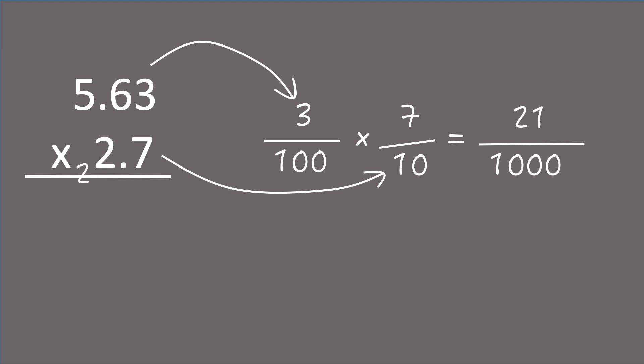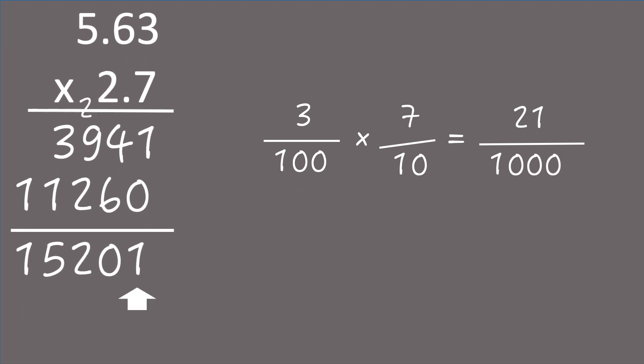Actually it's in this way, and with our understanding of fraction multiplication, that we can make out why that counting in rule works. When we multiply these numbers, the first thing we're doing is actually multiplying 3 hundredths by 7 tenths. So it makes sense that this will produce some number of thousandths.